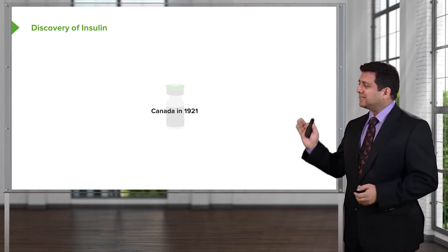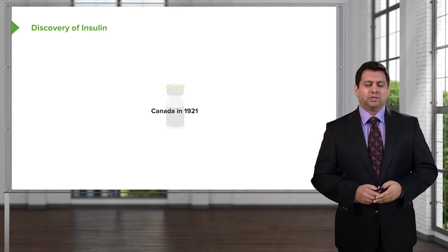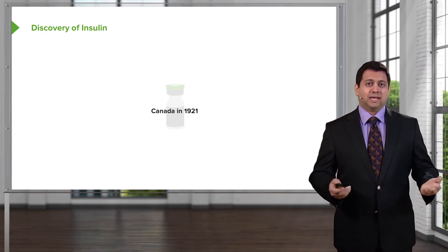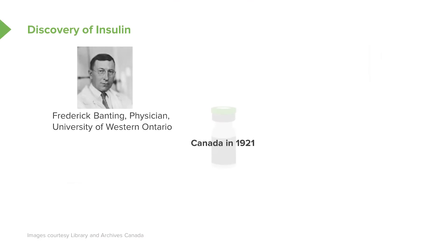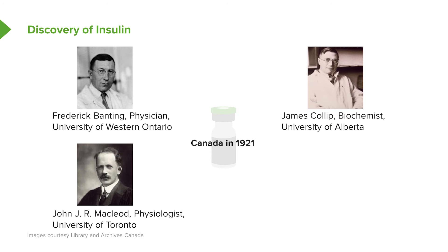Let's go back to Canada in 1921. There were four important individuals which led to the discovery of insulin. The first was Frederick Banting, who was a physician studying at the University of Western Ontario. The second was a man by the name of James Kolob, a brilliant biochemist at the University of Alberta. J.J.R. McLeod was a physiologist who was working at the University of Toronto.